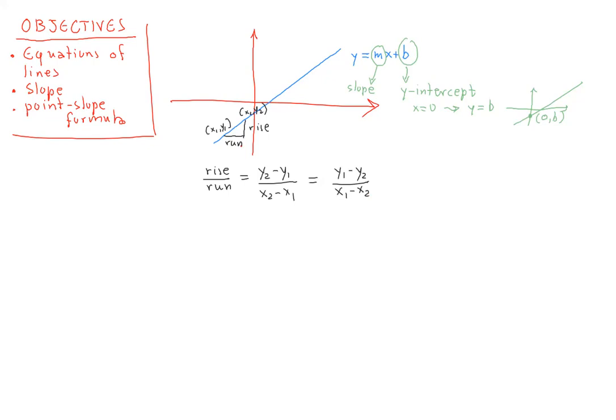What is kind of interesting is that if you take any two other points, and you form the corresponding ratio. Let's say this is (x3, y3) and this is (x4, y4), and it turns out that the rise over run for those points will be (y4 - y3) over (x4 - x3).